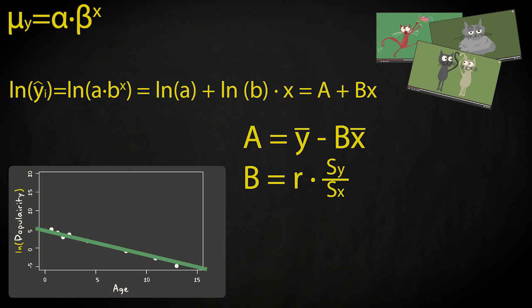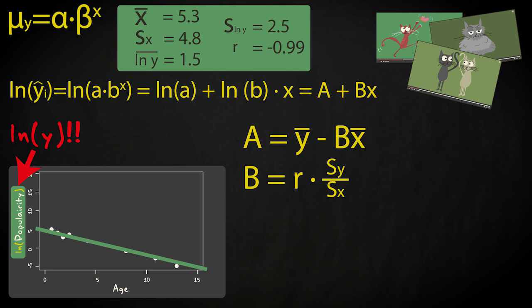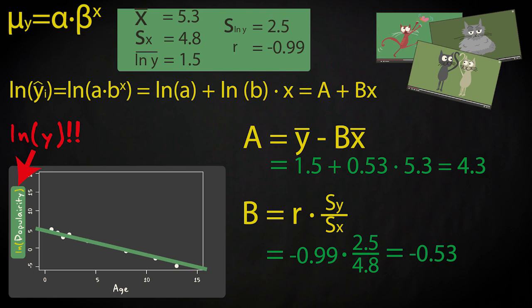We can now use the linear regression formulas to calculate the intercept and regression coefficient for this linearized version of the equation. Remember to use the variable log y and not y when calculating the mean, standard deviation, and correlation. Once we've calculated the intercept capital A and regression coefficient capital B for the linearized model, we can determine what the values of the lowercase a and b, the intercept and regression coefficient of the exponential model are.